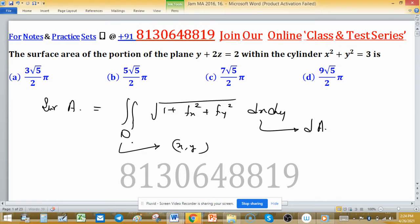Coming from the region d, here y plus 2z equal to 2, this is the plane. This implies z equal to 2 minus y upon 2, or 1 minus y upon 2. This is z, because we have to find the surface area of this plane within the cylinder. Equation of cylinder in 3D: x squared plus y squared.